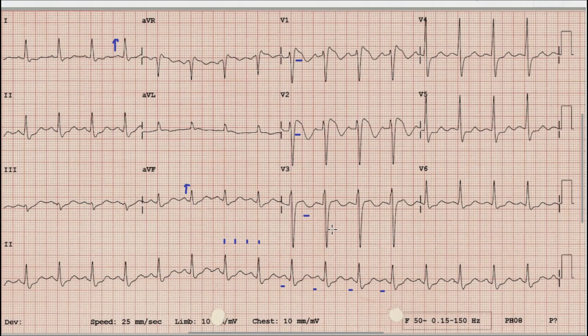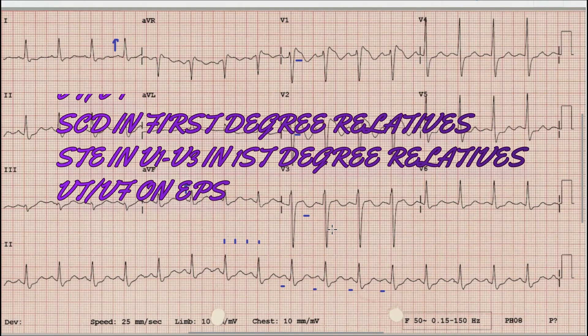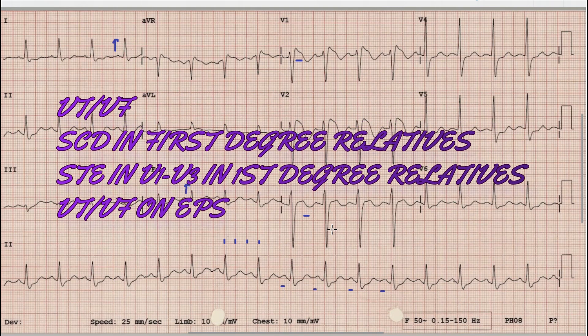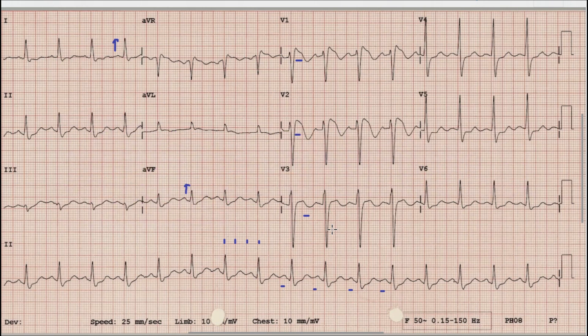For Brugada pattern to be called Brugada syndrome, the patient must have at least one of the following: presence of ventricular tachycardia or ventricular fibrillation, history of sudden cardiac death in a first-degree relative before the age of 45, presence of coved upward ST elevation in first-degree relatives, or presence of ventricular arrhythmia in a patient with Brugada pattern on EP study.